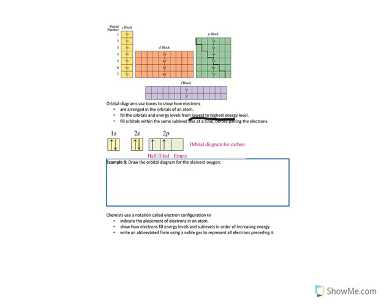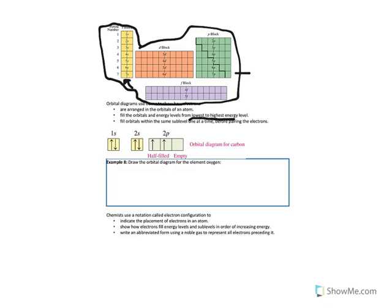If you look at this diagram at the top of the page, you will see the periodic table of elements represented in blocks. There are the s blocks in yellow, the p blocks in green, the d blocks in orange, and the f blocks in purple.